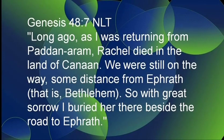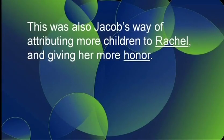Look at verse 7. 'Long ago, as I was returning from Paddan Aram, Rachel died in the land of Canaan, and with great sorrow I buried her there beside the road to Ephrath.' This verse tells us there was a sentimental significance to Jacob adopting Joseph's two sons. Rachel only had two children, and she died giving birth to the second child, Benjamin. So this was Jacob's way of attributing more children to Rachel and giving her more honor. I'm going to stop here because what I'm going to share from here on out, you really need to understand.